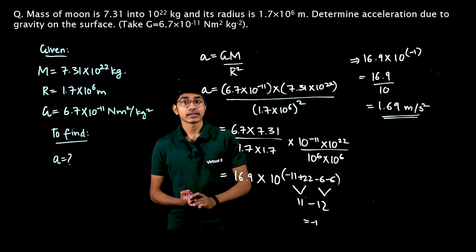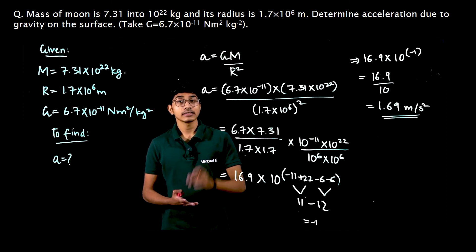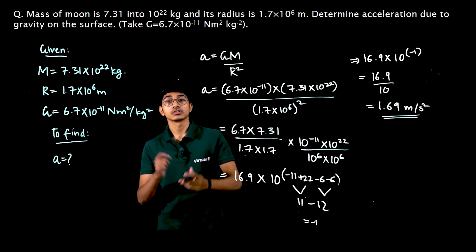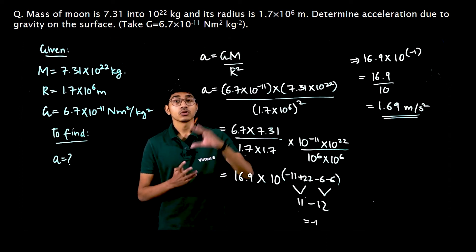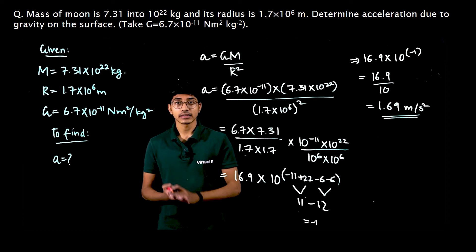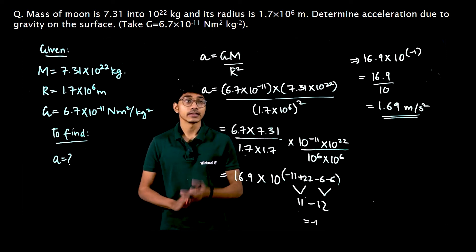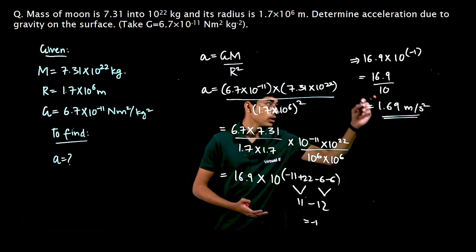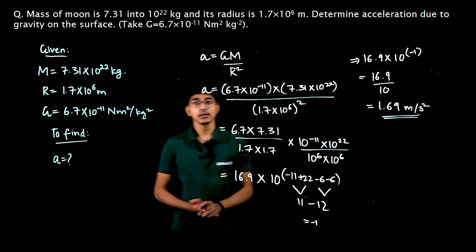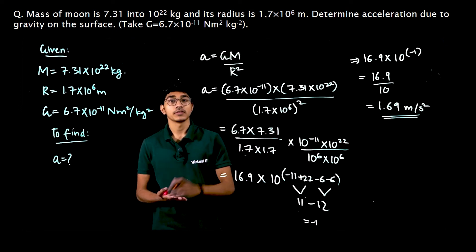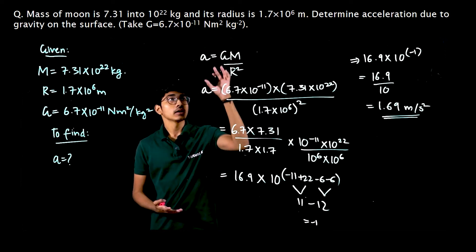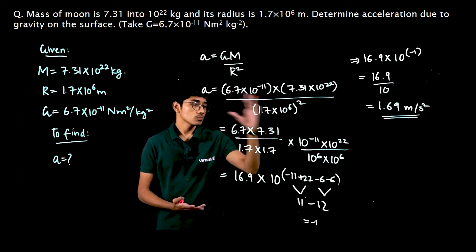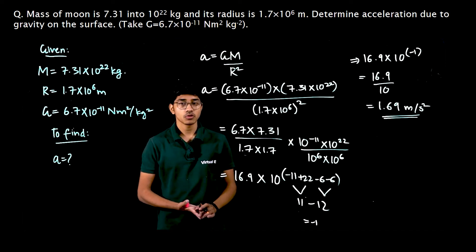So what we found is that the acceleration due to gravity on the moon is 1.69 meter per second square. We already know that on earth it is 9.8 meter per second square. So is tarike se hum ne compare kiya hai ki humari acceleration due to gravity on earth is 9.8, jabki moon pe 1.69 meter per second square. We solved it by writing all given quantities, applying the formula for g, and putting in all values.